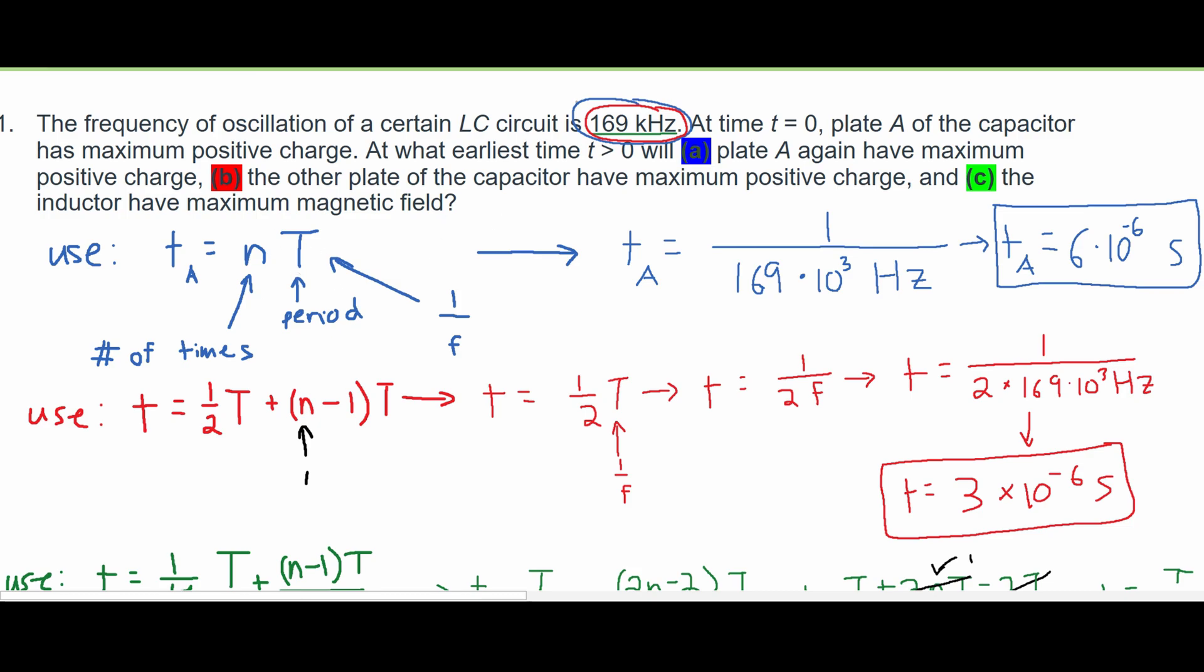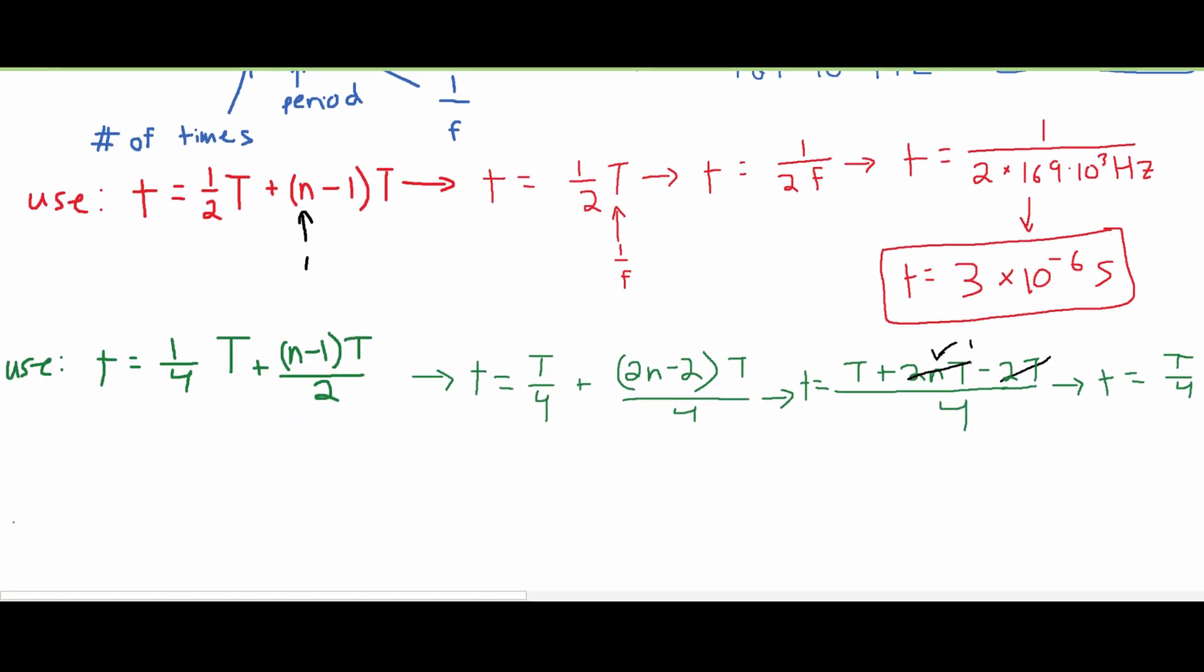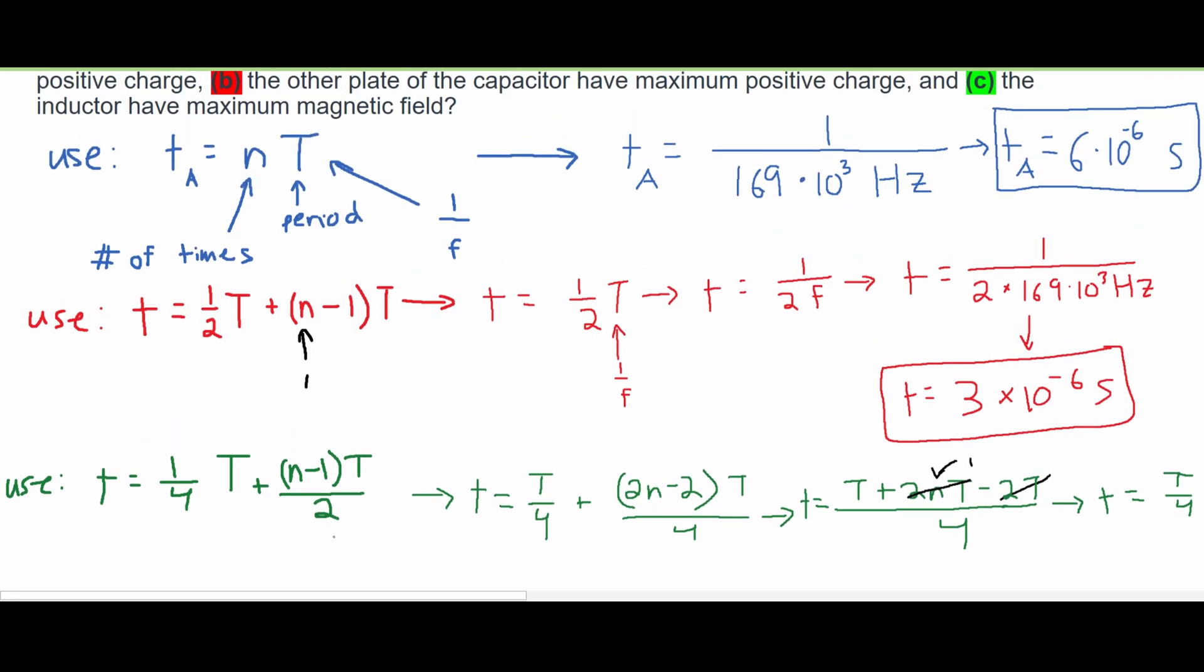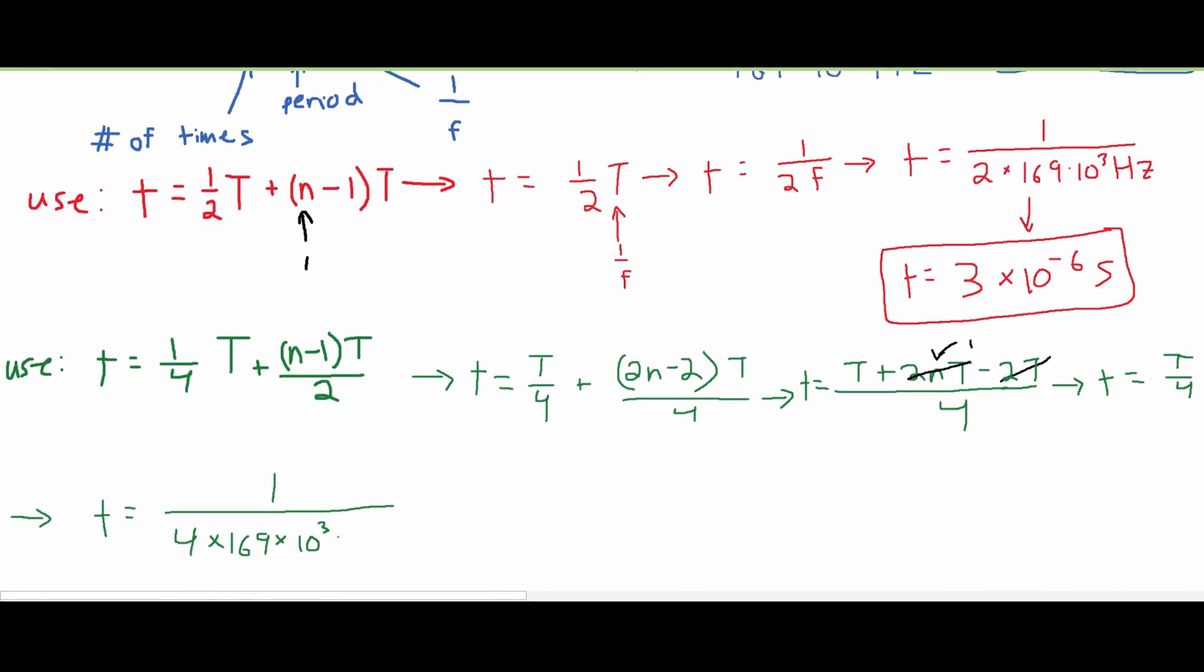And after we do this, we're going to get T is equal to 1 over 4 times 169, which is the frequency, times 10 to the 3rd. Since we are given it in kilohertz, and we need it to be in hertz. And this is the conversion for that. And then after we plug this into our calculator, we are going to get 1.5, if we round,